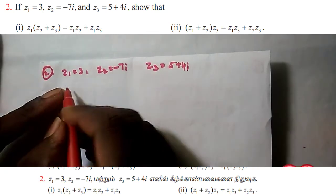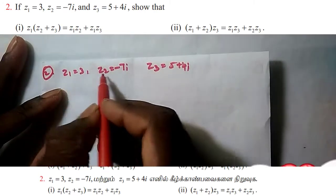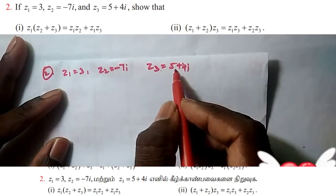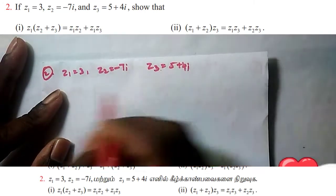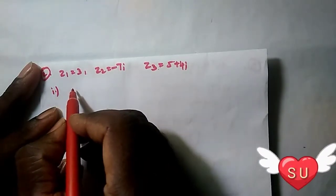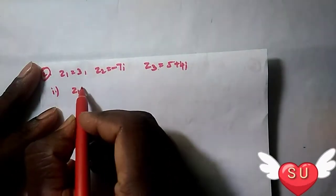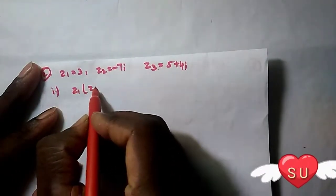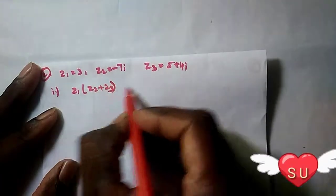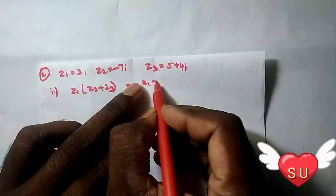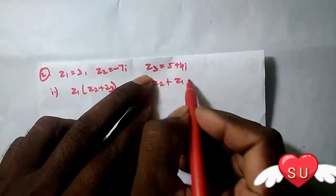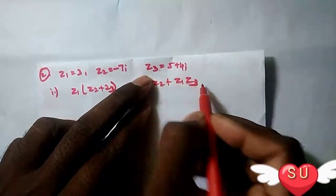So, second sum. I am going to take Z1 equal to 3, Z2 equal to minus 7i, Z3 equal to 5 plus 4i. Then show that Z1 into Z2 plus Z3 equal Z1·Z2 plus Z1·Z3.